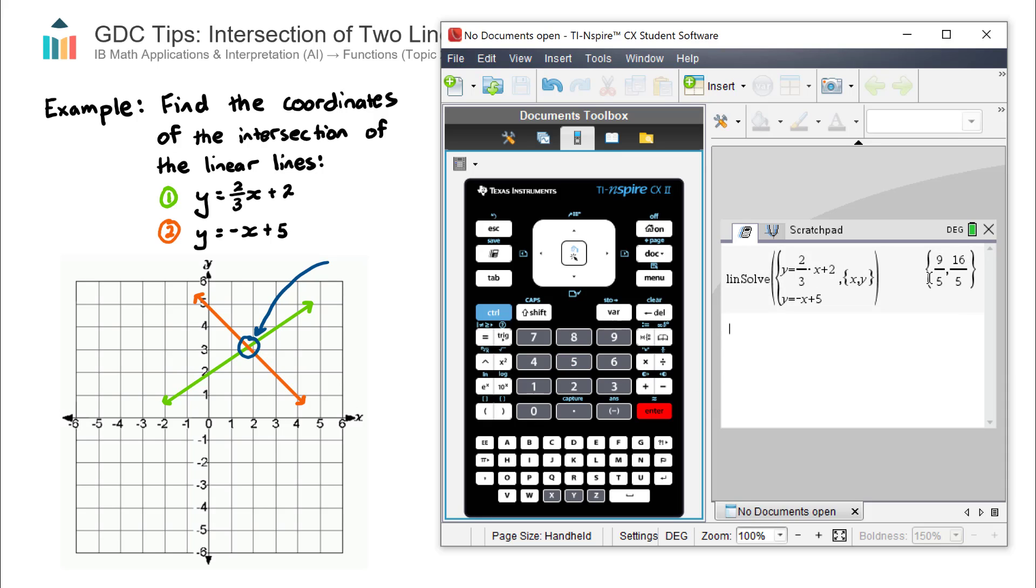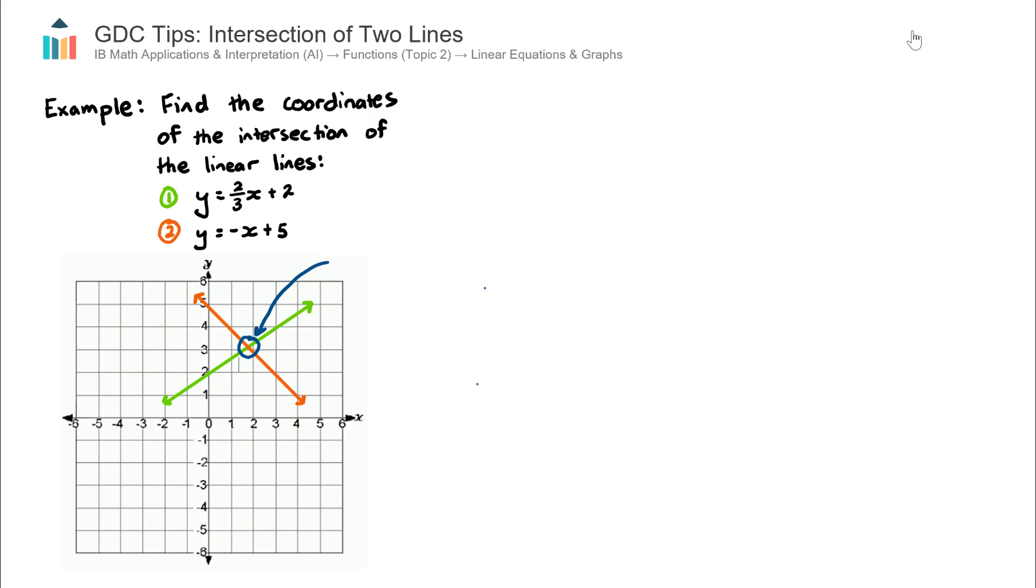Now that gives it in fraction form and that would be fine, but I'm going to convert mine to a decimal. So control enter. So it's 1.8, 3.2. So that right there is the coordinate of where these two linear lines pass through. So that's the first method.